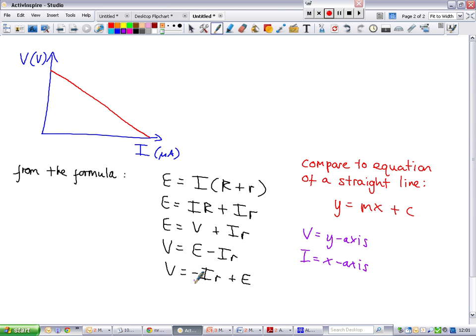But the remaining two quantities in this equation, compared to the equation of a straight line, do. Because if we use E, E is our constant C, and our gradient is equal to negative r.